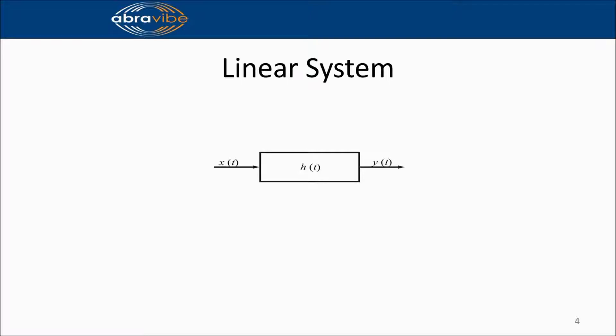The theory of linear systems says that the output of a linear system is the convolution of the input signal with the impulse response function of the system. The convolution result of y of t equals the integral from minus infinity to infinity of the product of x of u and h of t minus u du.